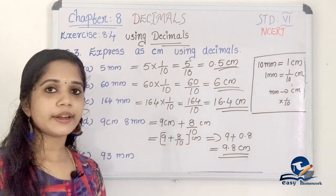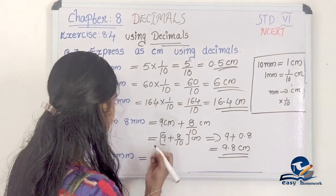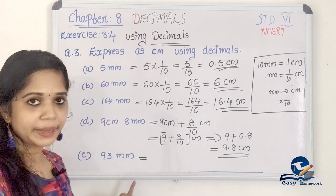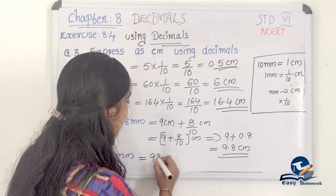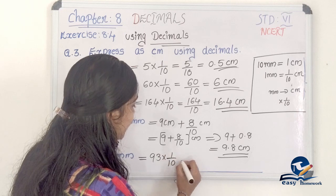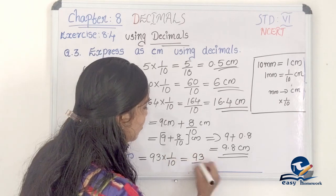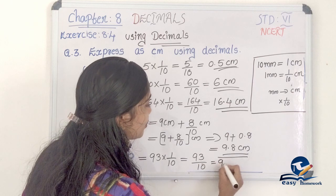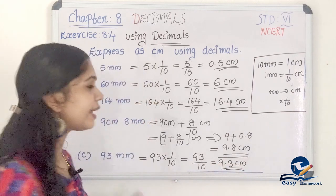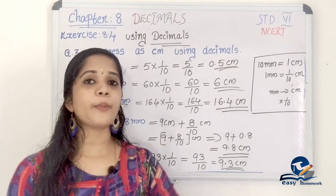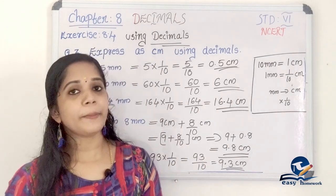The next question is 93 mm. 93 mm expressed as cm: 93 into 1 by 10, so 93 divided by 10 equals 9.3 cm.